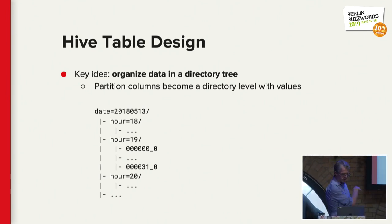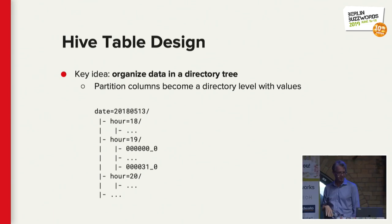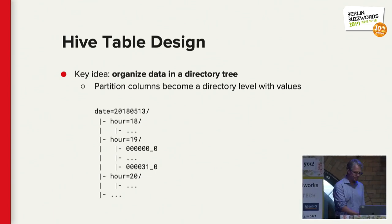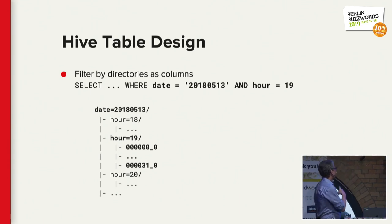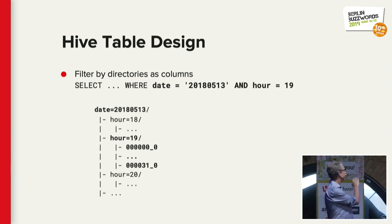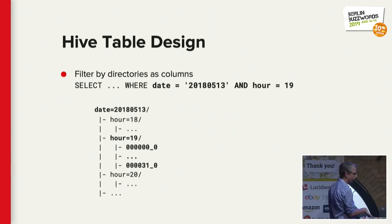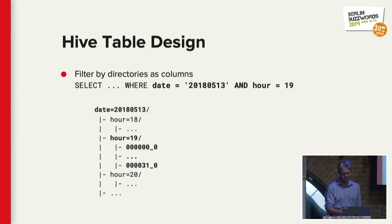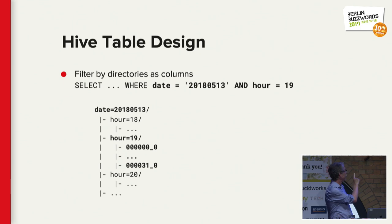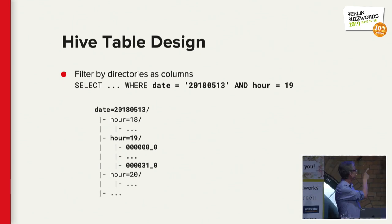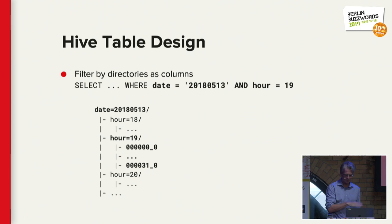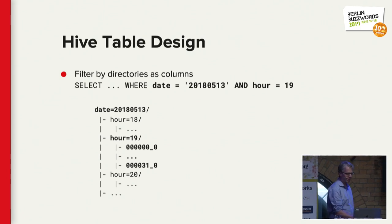The important characteristics are you've got a directory structure. You need to traverse the directory structure to see what data you have, and then the data is at the leaves. When you want to do a filter, Hive does the first level of filtering by only reading the directories that can match the predicate. For example, if you only needed the 19th hour out of that date, you could just go to that nested directory and pull out the data that you need.